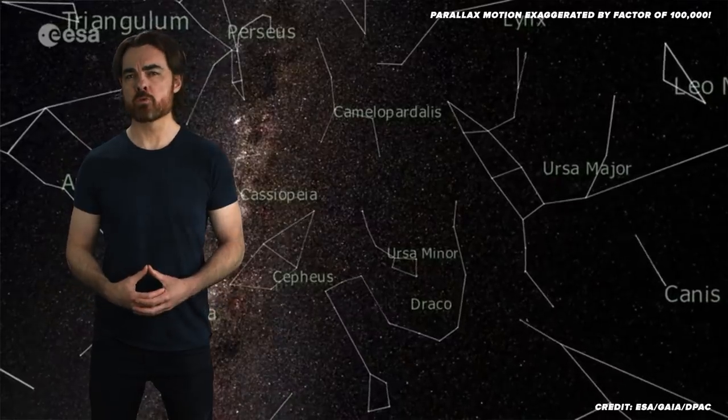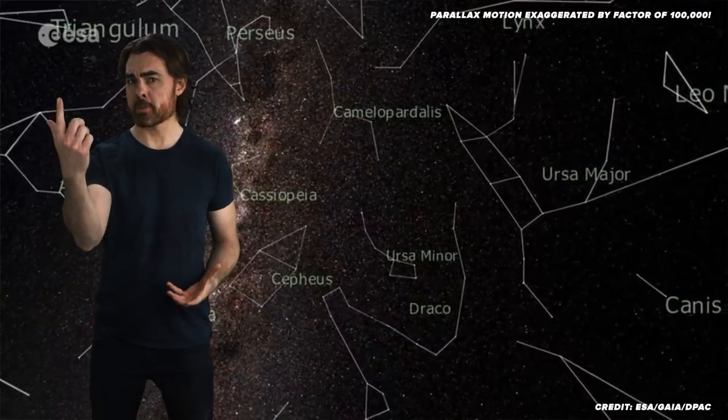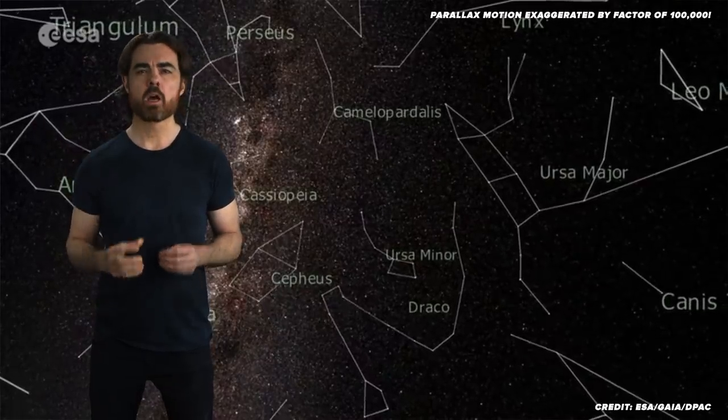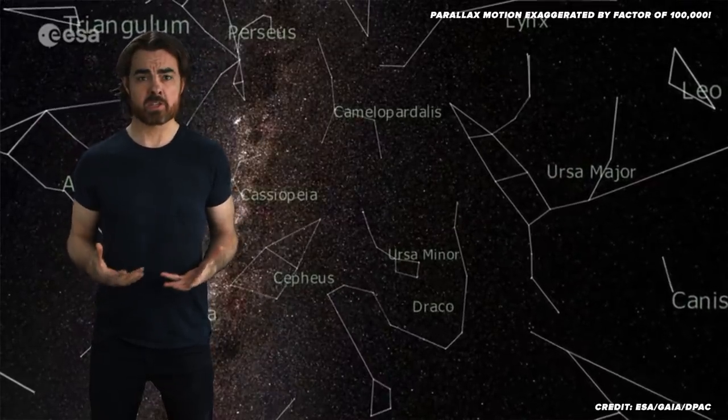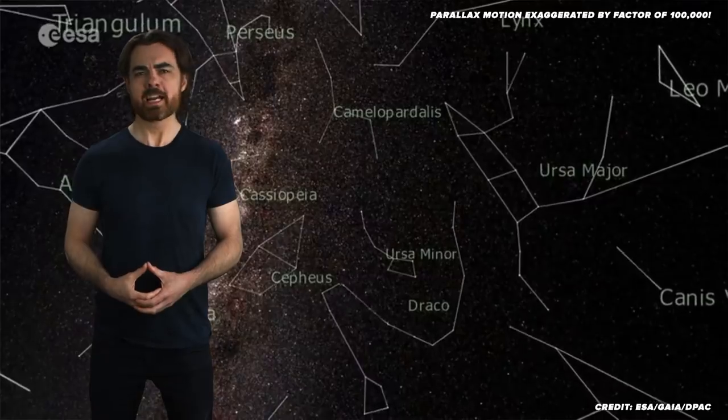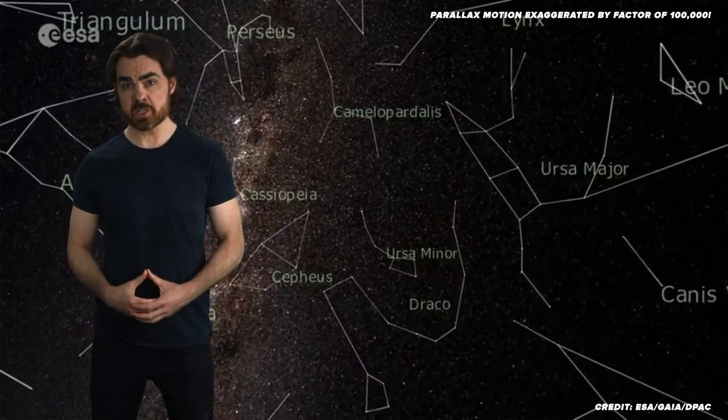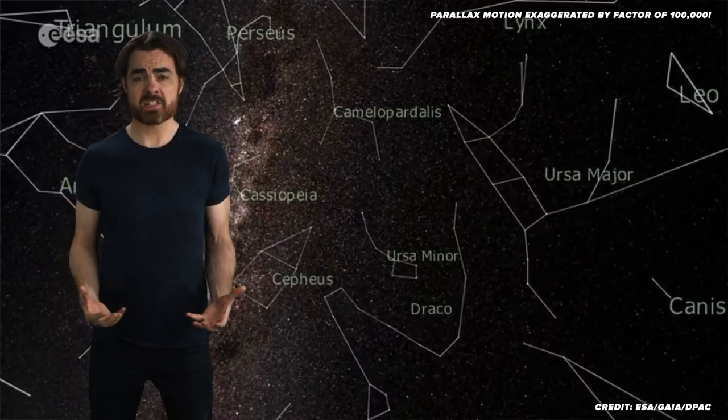It's just like the way your finger moves relative to the background when you wink your eyes back and forth, and the degree of motion depends on the distance. Gaia's winks are the size of its entire orbit. Coupled with its incredible position measurements, this enables Gaia to measure distances to stars as far away as the galactic center.